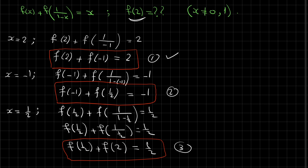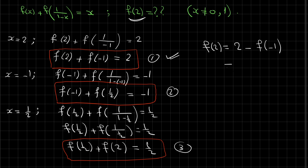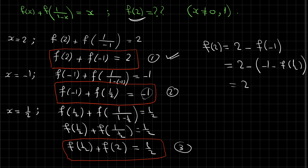The question is to find f(2). From equation 1, we can write f(2) = 2 - f(-1). From equation 2, f(-1) = -1 - f(1/2). Replacing f(-1) in the expression: f(2) = 2 - (-1 - f(1/2)) = 2 + 1 + f(1/2) = 3 + f(1/2).